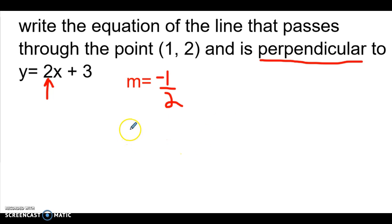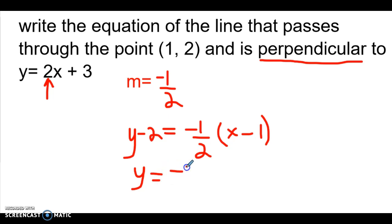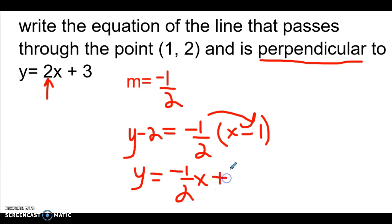When we write our equation of a line we are going to have y minus the y in the point, which is two, equals the slope that we just found, negative one half, times x minus the x in the point, which is one. Then we're going to get y by itself, distributing the negative one half in front of the parentheses. So we have negative one half x, and when you do negative one half times negative one we get positive one half.